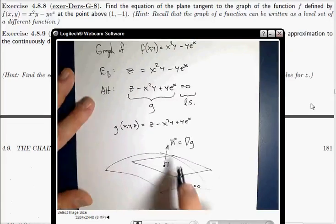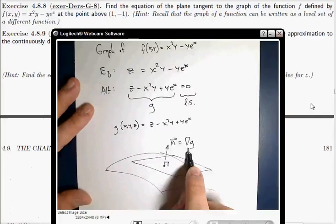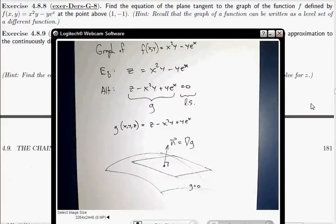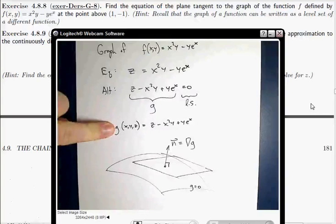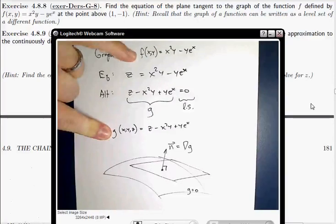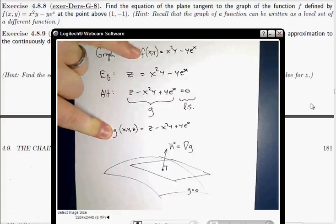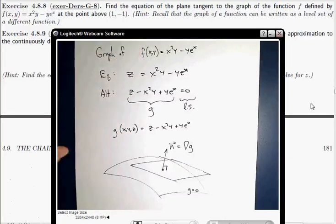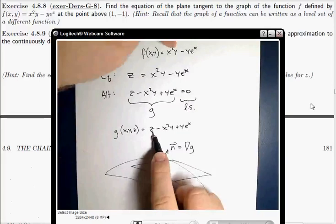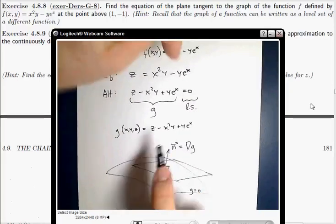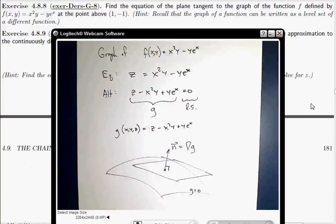So I'm going to find my normal vector by computing the gradient of this function. Now, critically, this function is not the same as that function that we were given. This is a function of two variables. This is a function of three variables. And furthermore, they're different functions. This has got a z in it, this doesn't. The minus signs are different also. They're different functions, and so you have to first do this chapter two kind of deal where you reinterpret a graph as a level set and make sure to understand the difference between those two things.